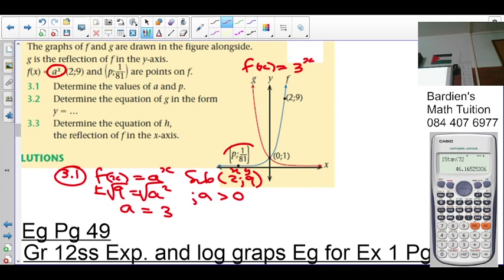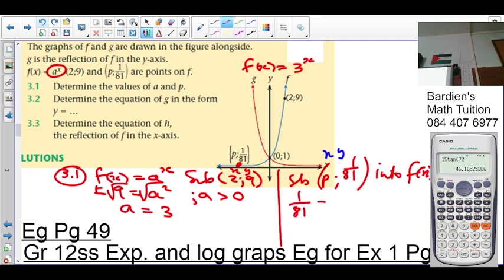I couldn't have substituted this point in to solve for A. Otherwise, we'll have two unknowns, as you can see. So my equation now is f of x equals 3 to the x. Now, in order to calculate P, you're going to substitute (P, 1/81) into f of x equals 3 to the x. Remembering, this is the x and the y. So 1 over 81 equals 3 to the p. Again, it's an exponential equation. 1 over 81 can be written as 81 is 3 to the 4. That's going to give you 3 to the negative 4 equals 3 to the p. Therefore, p equals negative 4. That's negative 4 and 1 over 81.